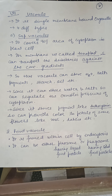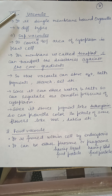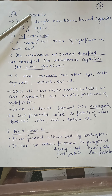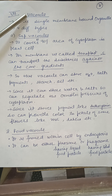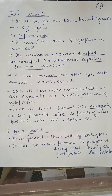The next organelle we are going to discuss is the vacuole. Vacuoles are single membrane-bound organelles. But in prokaryotes, vacuoles are membrane-less — true vacuoles are absent. In prokaryotes, only gas vacuoles or pseudo vacuoles are present.